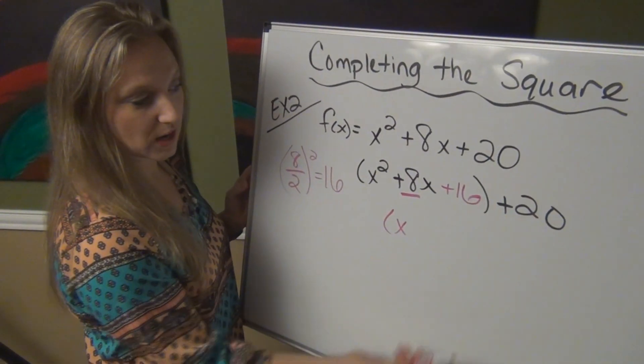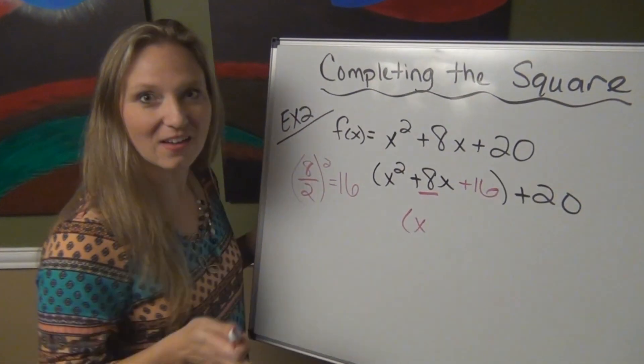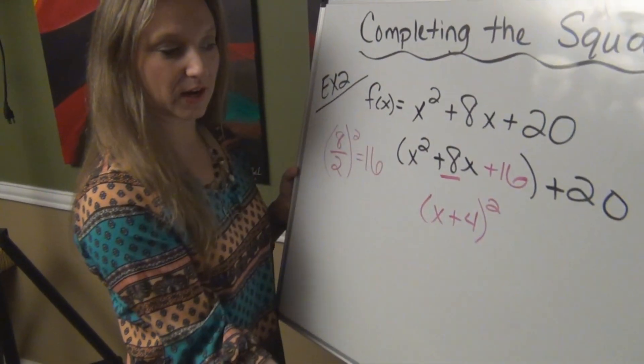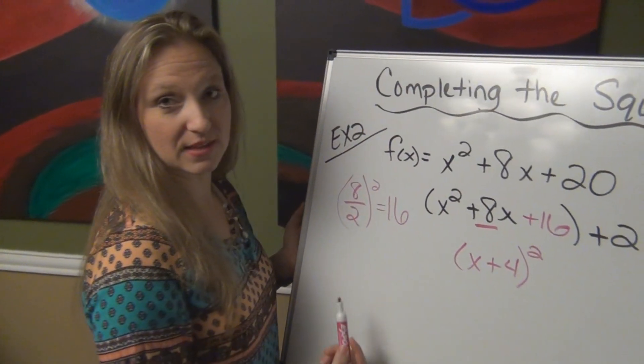The perfect square is always going to be whatever the square root of this number, the half part basically. So x plus 4, and then when I square, that equals the same thing as this. Let's check it just to make sure.